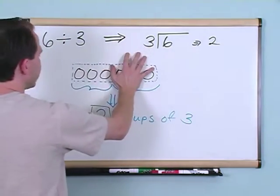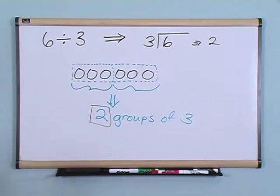One group of three, two groups of three. So the answer is two. Six divided by three is two.